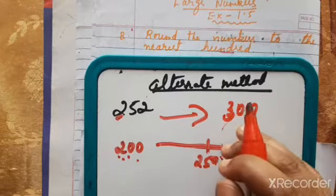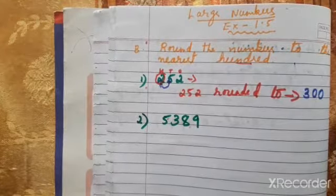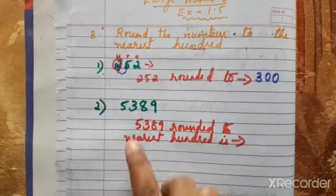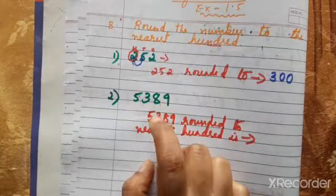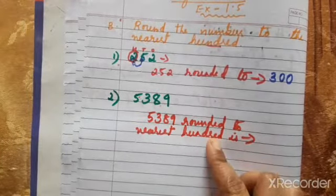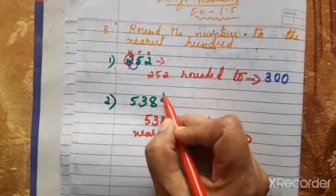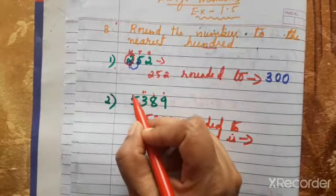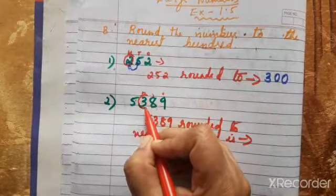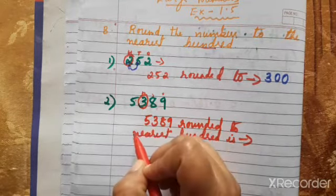Next question: 5389. We have to round 5389 to the nearest hundred. First step — find the place value. One, tens, hundreds, thousands — we are rounding the hundreds place. In 5389, the digit in the hundreds place is 3.